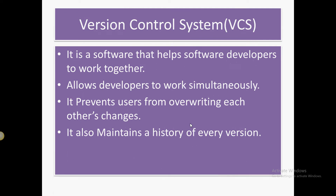A version control system is software through which software developers can work together. The main concept is that more than two people — a group of people — can work simultaneously and they will not override each other's work. They also maintain the history of every version.